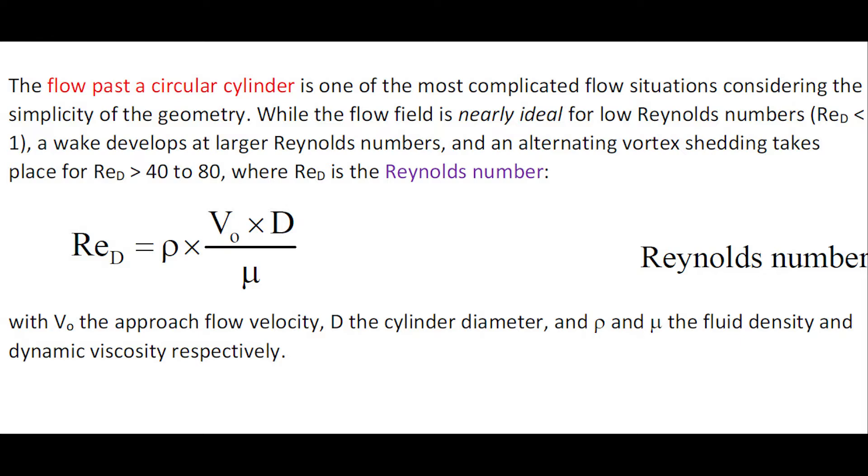For larger Reynolds numbers, a wake develops and an alternating vortex shedding takes place, typically when the Reynolds number is greater than 40 to 80.